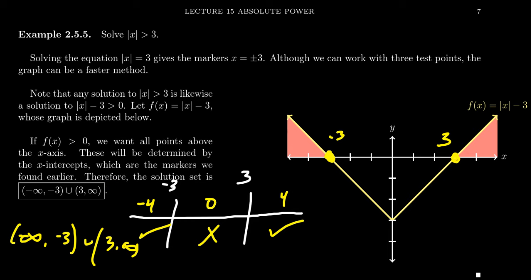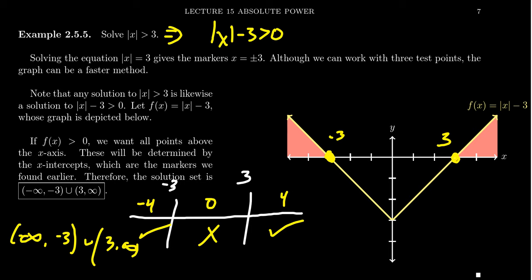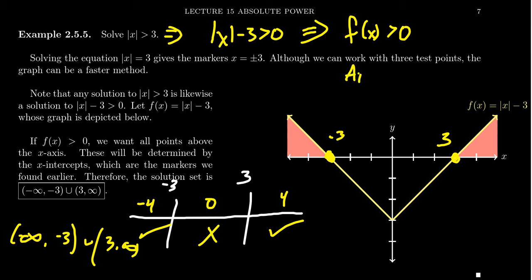I'm actually a big proponent of solving these inequalities graphically because the test points require doing arithmetic. As these things get more complicated, the arithmetic for your test points gets more complicated too, and the less arithmetic we do, the less likely we are to make mistakes. So what we're going to do is rewrite the inequality as the absolute value of x minus 3 is greater than 0, and introduce the function f(x) equals the absolute value of x minus 3. We're really solving f(x) greater than 0, which means we're looking for where the graph is above the x-axis.